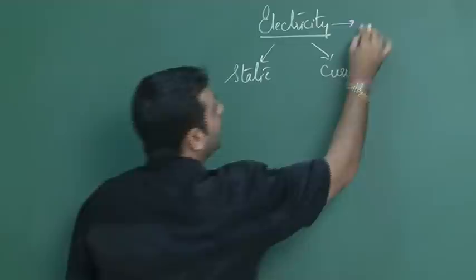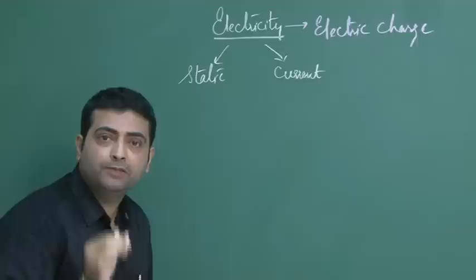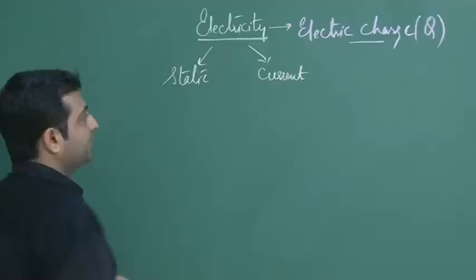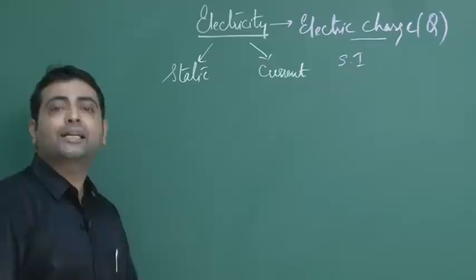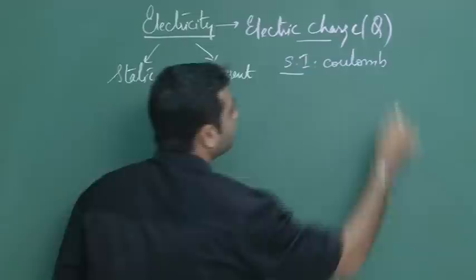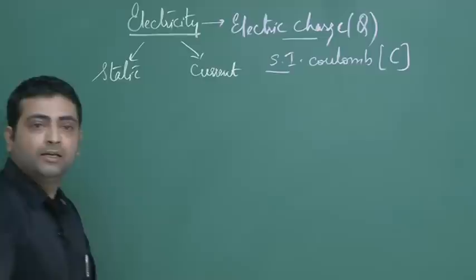The term electricity, if I consider, is simply called electric charge. Every physical quantity in physics has to be abbreviated by a symbol. Electric charge is symbolized by the variable capital Q. Its SI unit — the System Internationally Accepted Unit — is called Coulomb, spelled C-O-U-L-O-M-B, abbreviated as capital C.